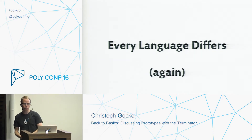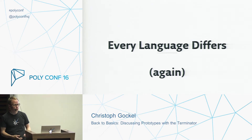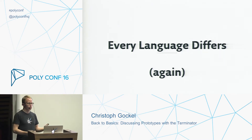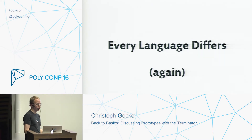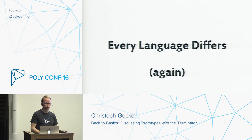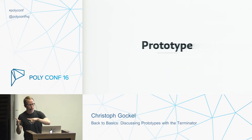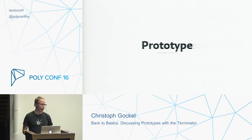JavaScript, for example, lets you define new methods and new functions on an object. So does Ruby. In Java, you can't really do that — you have an object and you cannot change it. You can change the state, but you cannot attach new methods.